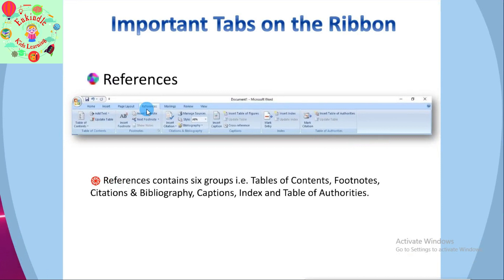The next tab is References. It is the fourth tab in the ribbon. It allows you to enter document sources, citations, bibliography commands, etc. It also offers commands to create a table of contents, index, and table of authorities. The References tab has six groups of related commands: Table of Contents, Footnotes, Citations and Bibliography, Captions, Index, and Table of Authorities.